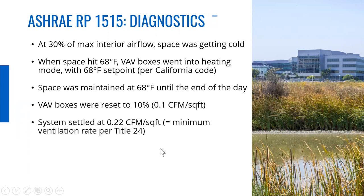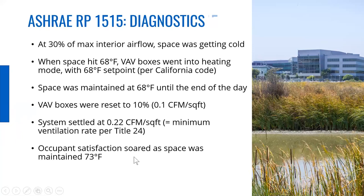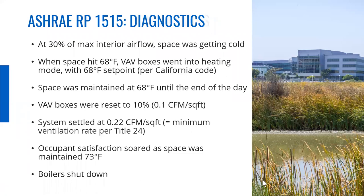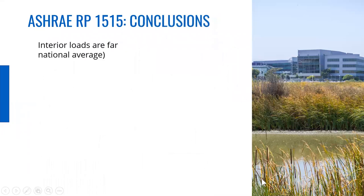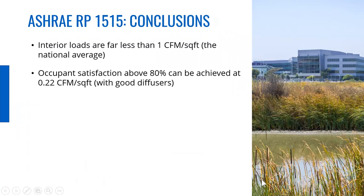The system was DDC single-duct VAV reheat — one CFM per square foot VAV boxes with 30% minimum, standard eight years ago when built. The diffusers were plaque-type. They discovered that every afternoon at two o'clock the space hit 68 degrees. All the VAV boxes went into heating mode and controlled at 68 degrees for the rest of the afternoon — a five-degree dead band. It's really uncomfortable at 68 at the end of the day. They did an occupant survey and found about 40% occupant satisfaction. They reset the boxes to much lower values — 10% or 0.1 CFM per square foot — and the system settled out at 0.22 CFM per square foot. That's about the minimum ventilation rate for Title 24, and occupant satisfaction went to 90%.